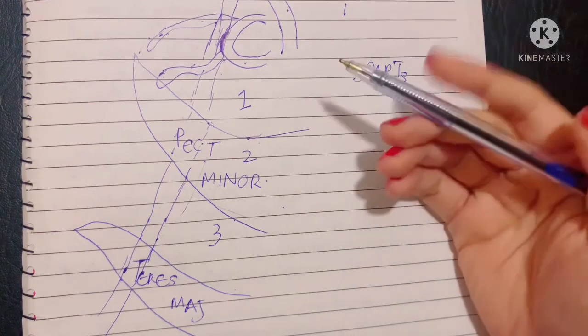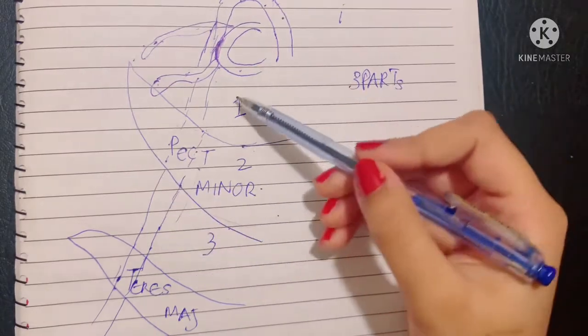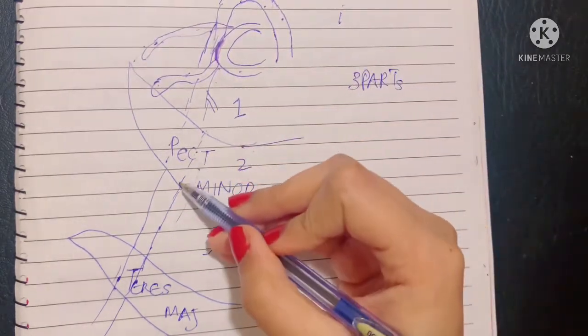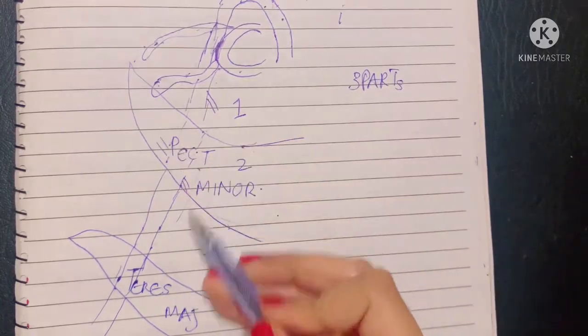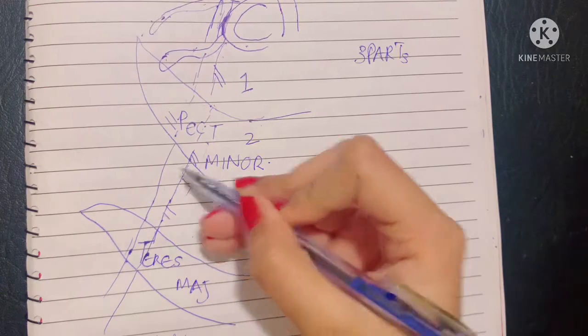Now let's talk about the various branches of the auxiliary artery. The parts make it easier. The first part gives only one branch while the second part gives two branches. The third part, since it's number three, gives off three branches.